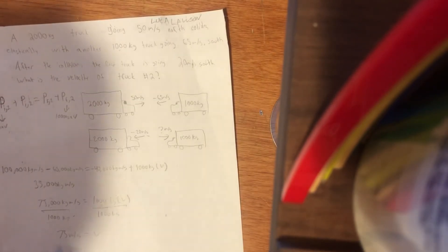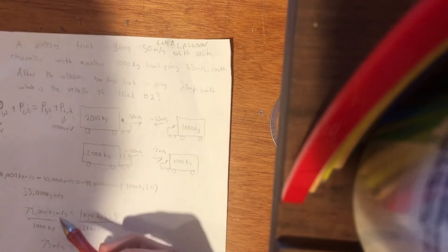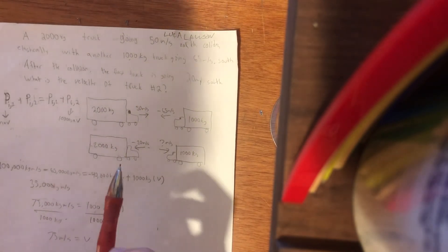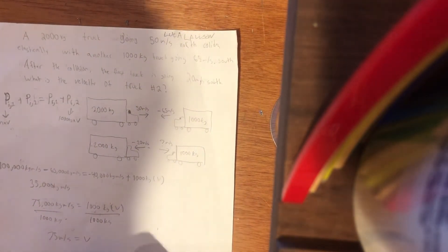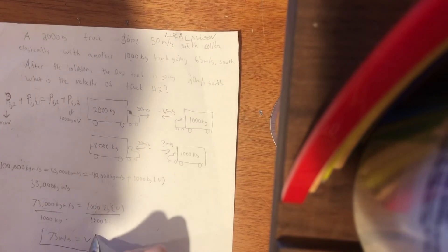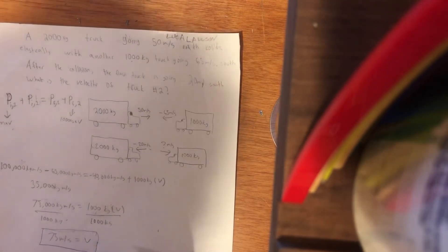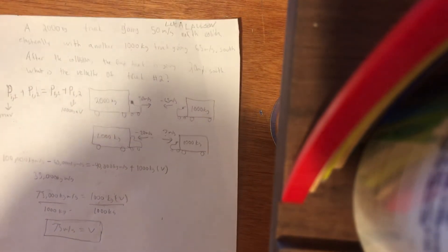This means, because it's positive, it's going north. So we know that the final velocity of truck number two is 75 meters per second north. Thank you for watching.